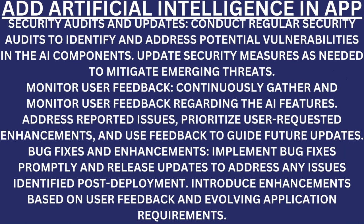Update dependencies. Security audits and updates. Conduct regular security audits to identify and address potential vulnerabilities in the AI components — update security measures as needed to mitigate emerging threats. Monitor user feedback. Continuously gather and monitor user feedback regarding AI features — address reported issues, prioritize user-requested enhancements, and use feedback to guide future updates. Bug fixes and enhancements. Implement bug fixes promptly and release updates to address issues identified post-deployment. Introduce enhancements based on user feedback and evolving application requirements.